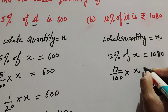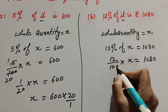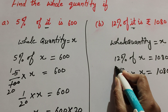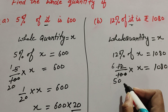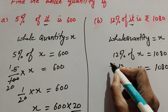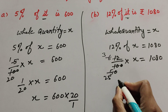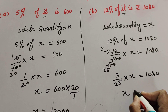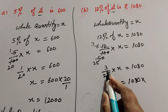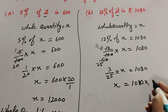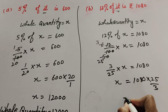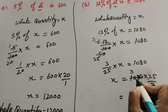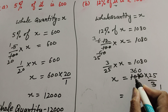12% is 12 over 100, multiply x equals 1080. 12 and 100 are both divisible by 2 — 2 sixes are 12, 2 fifties are 100 — giving 6 over 50. Again 6 and 50 are divisible by 2 — 2 threes are 6, 2 twenty-fives are 50 — so it becomes 3 over 25 times x equals 1080. Transposing, we multiply by the reciprocal 25 over 3. Since 1080 and 3 are both divisible by 3 — 3 three-hundreds-sixty are 1080 — we get 360.